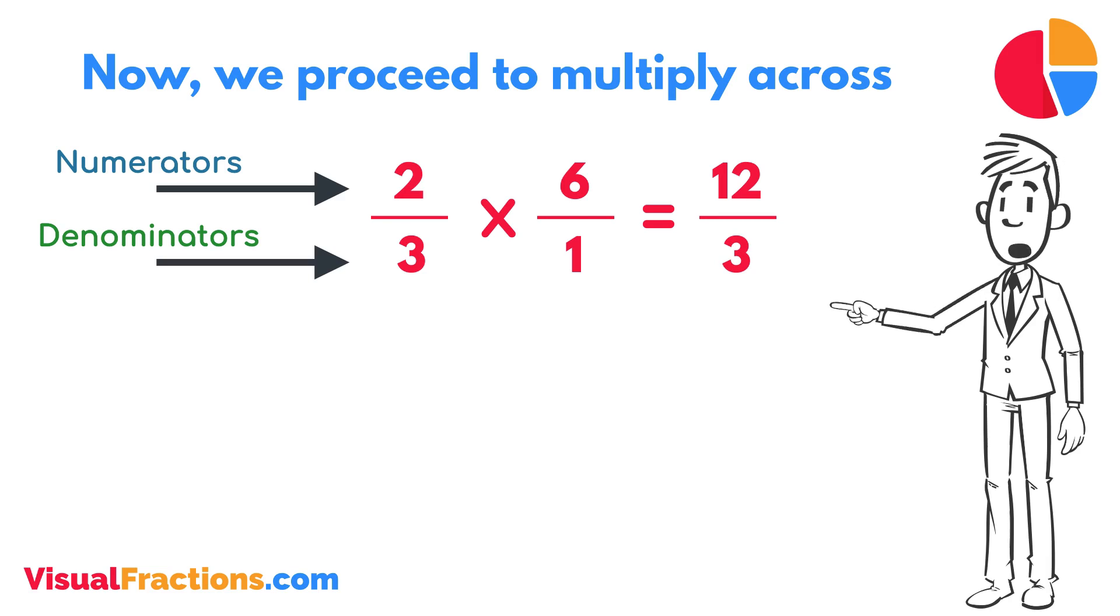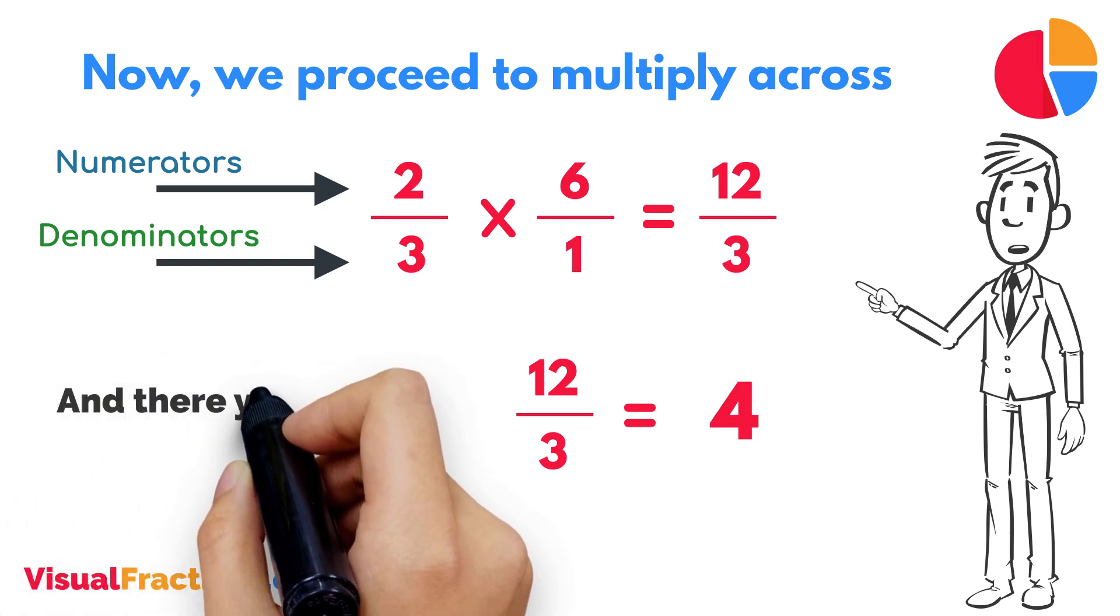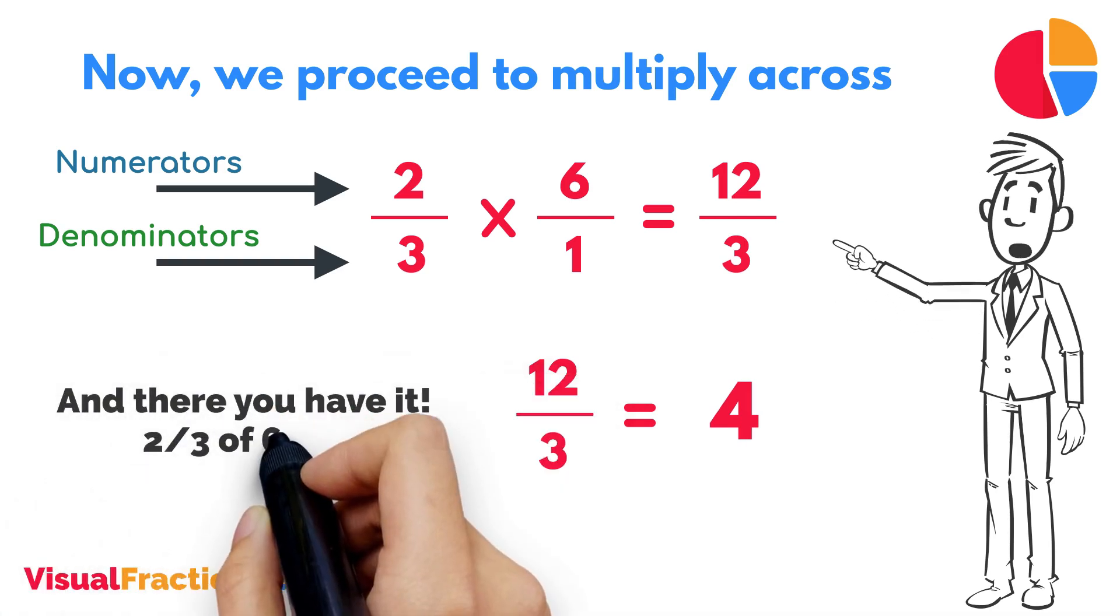To find the final answer, divide the numerator by the denominator. So, twelve divided by three equals four. And there you have it. Two-thirds of six is four.